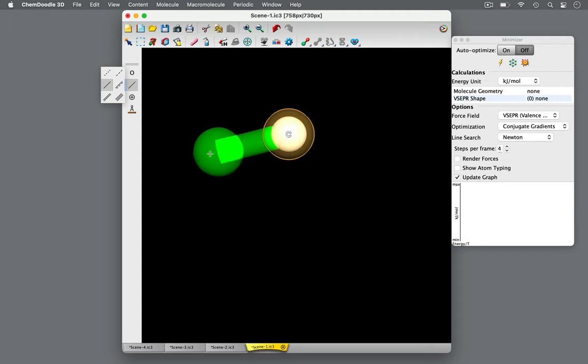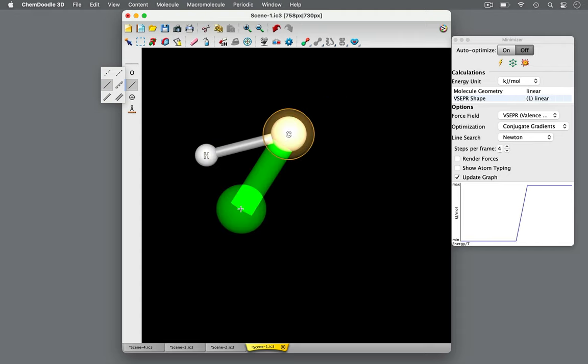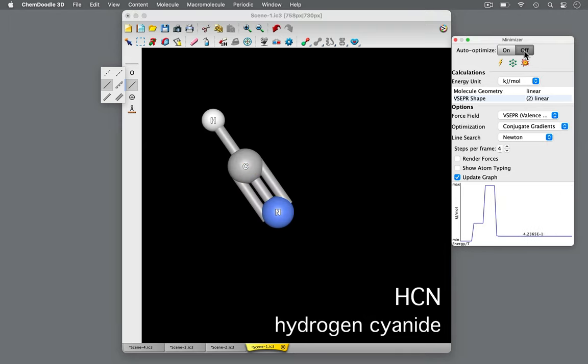These electron pairs in bonds or lone pairs repel one another, so the VSEPR model assumes that they will arrange themselves as far apart from each other as possible.